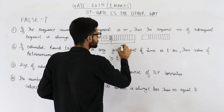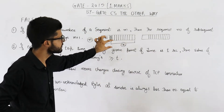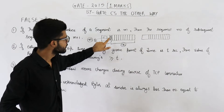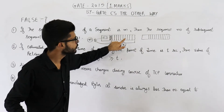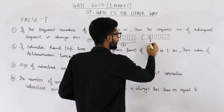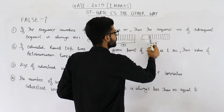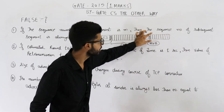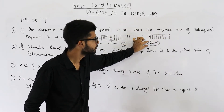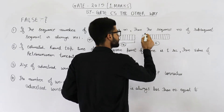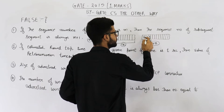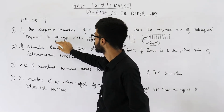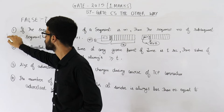Suppose this segment contains x bytes of data in total. Then the last byte will have sequence number m+x. Since the sequence number of a segment equals the sequence number of its first byte, the next segment's sequence number will be m+x, not always m+1. The word 'always' makes this statement false.